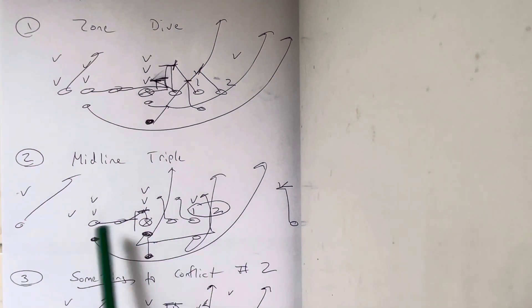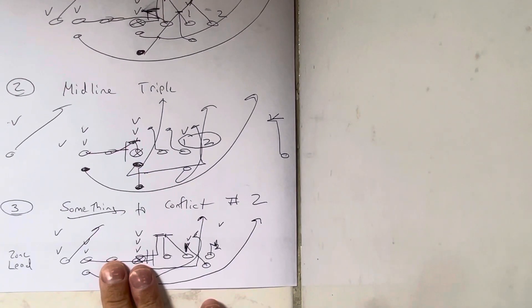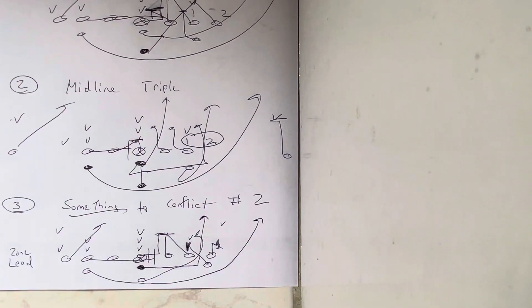Now, they better be getting that and that to run midline triple. Because if they're not, then they're just going to run something better.